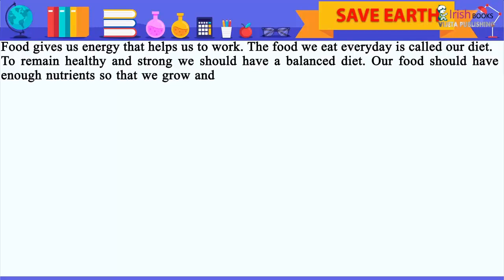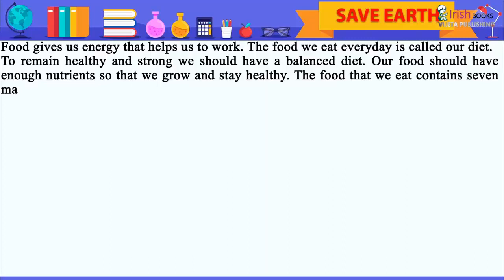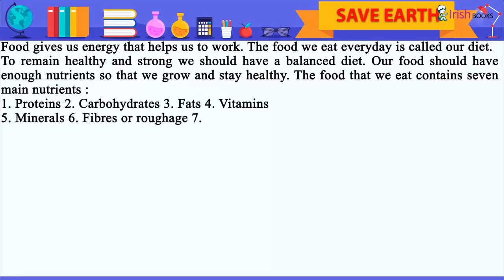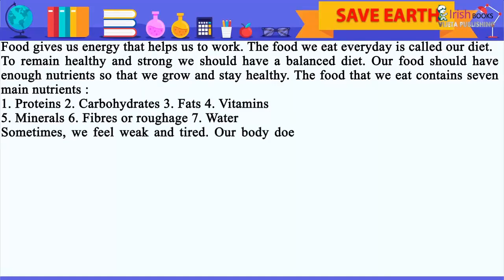The food that we eat contains 7 main nutrients: 1. Proteins, 2. Carbohydrates, 3. Fats, 4. Vitamins, 5. Minerals, 6. Fibers or Roughage, 7. Water.